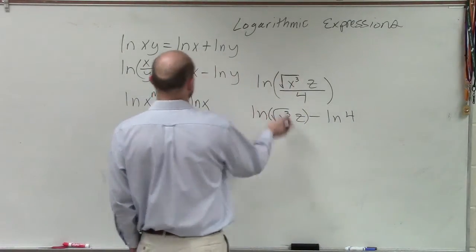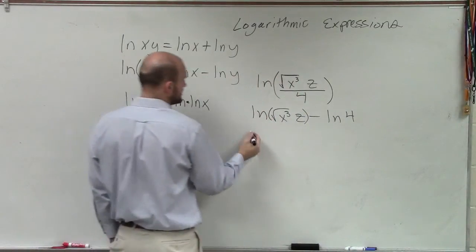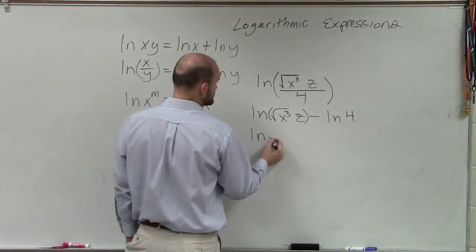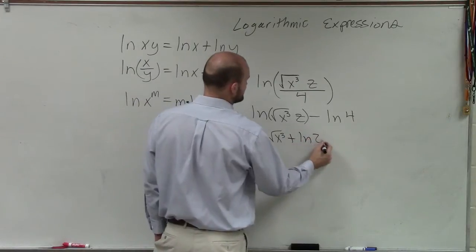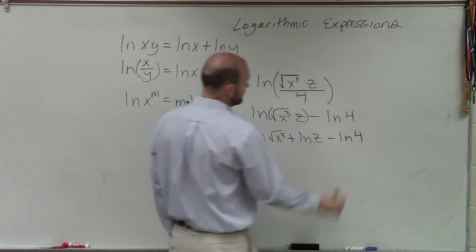So now I rewrite that. Since that's a product, I can rewrite it as an addition. So that's ln of the square root of x cubed plus ln of z minus ln of 4.